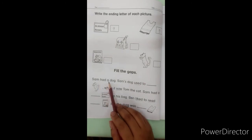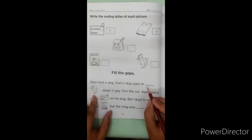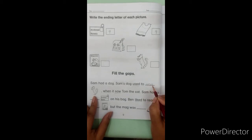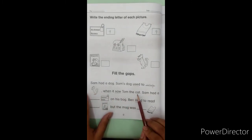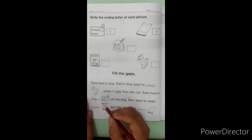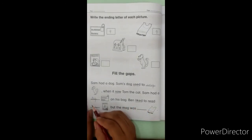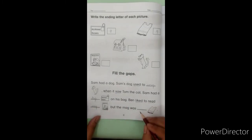Sam had a dog. Sam's dog used to wag when it saw Tom the cat. Sam had a dog on his bag. Ben liked to read mag. But the mag was rag.